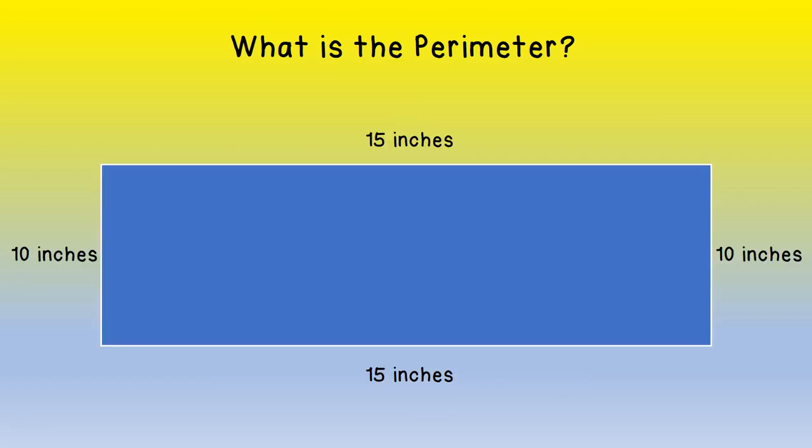For this perimeter of our rectangle, we're going to add up 15 plus 10, which is 25, and then add 15 plus 10, the other two sides, another 25, for a total perimeter of 50 inches.